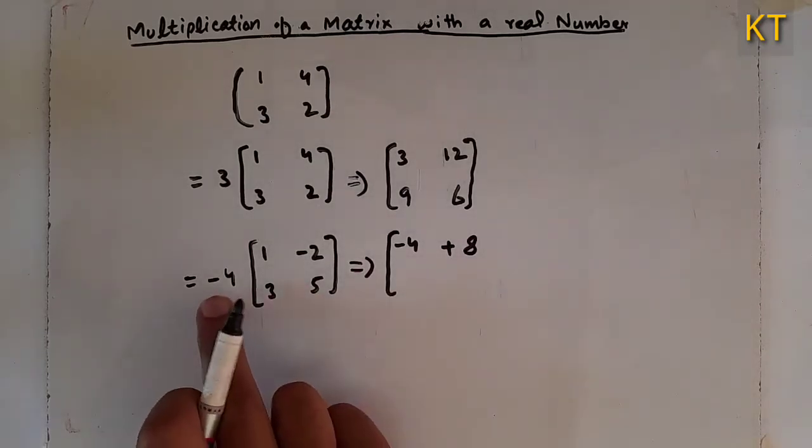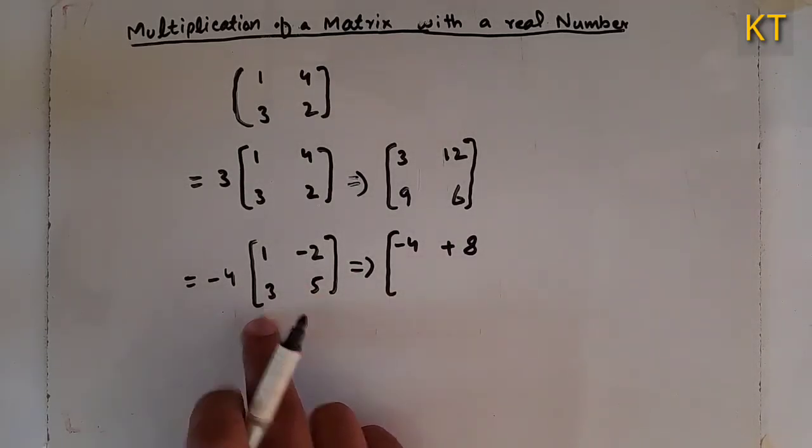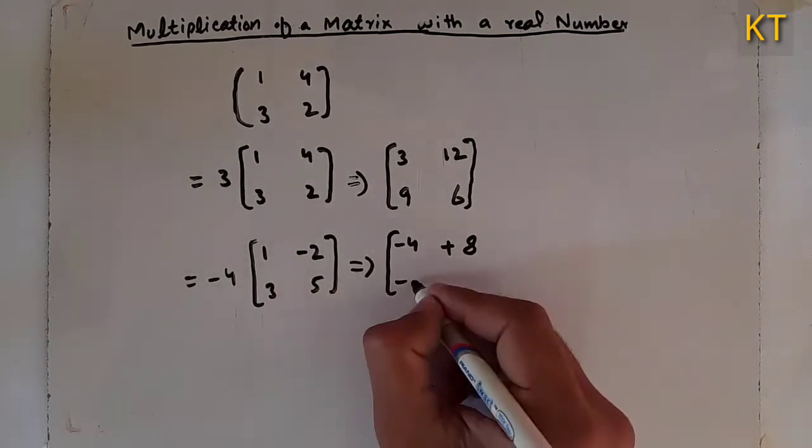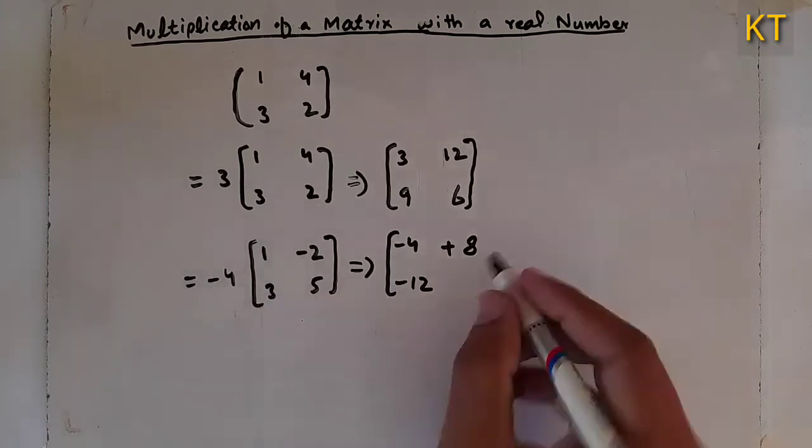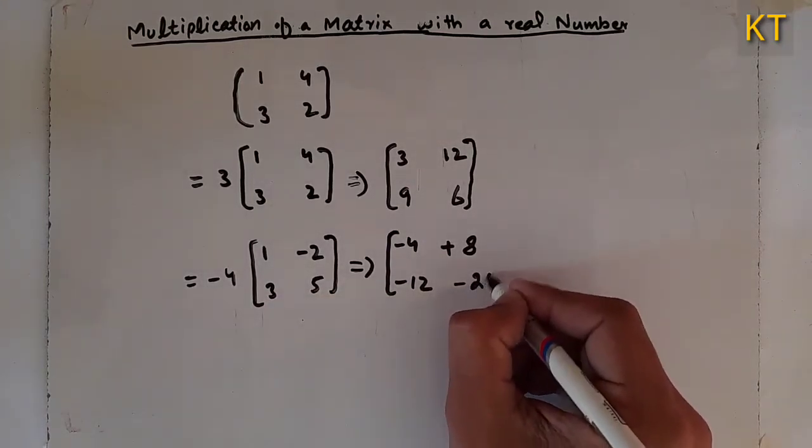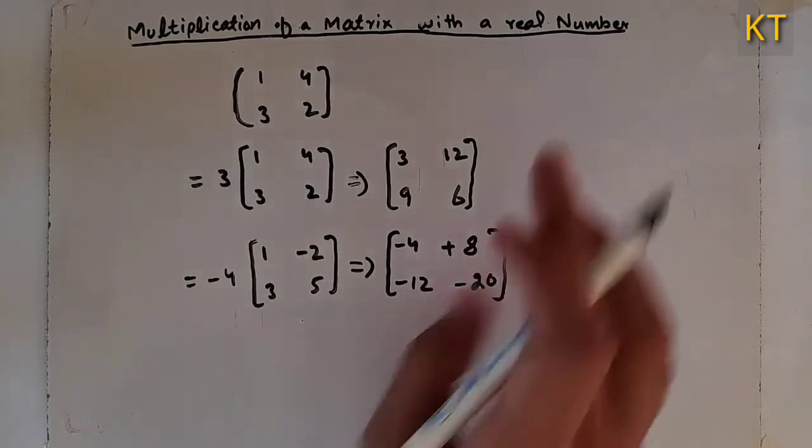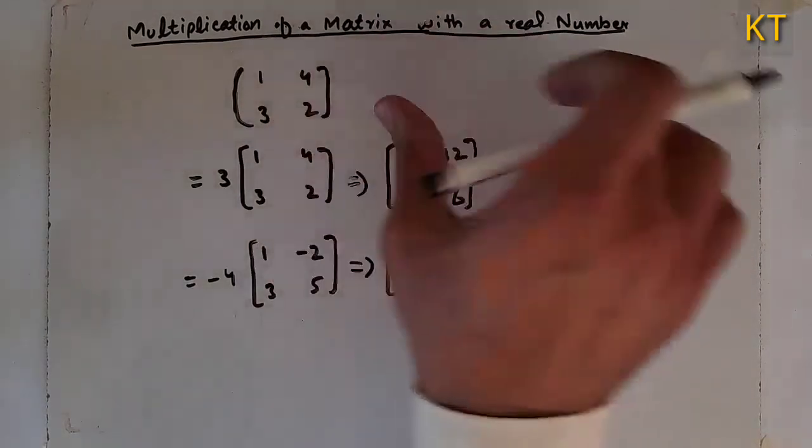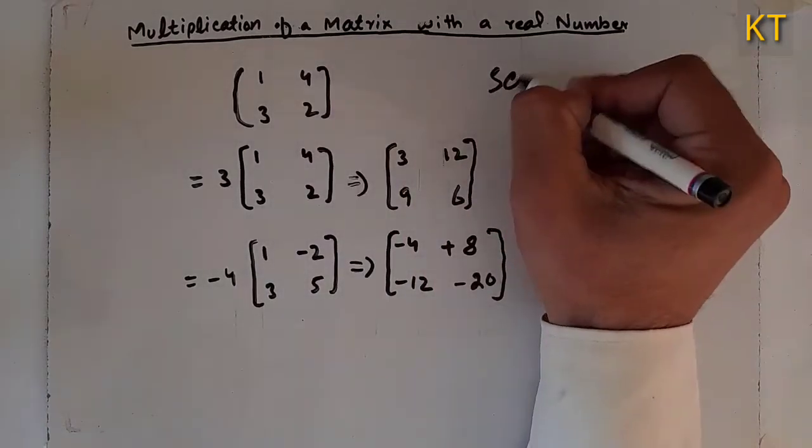The matrix will be multiplied. The number and the matrix are multiplied. This is called scalar multiplication.